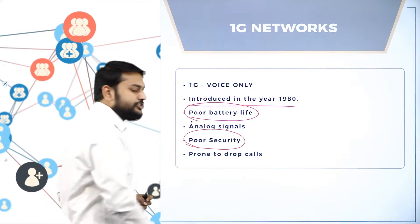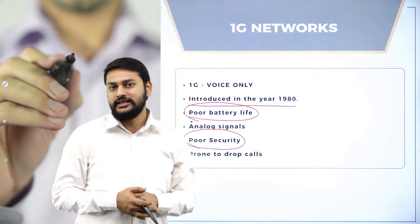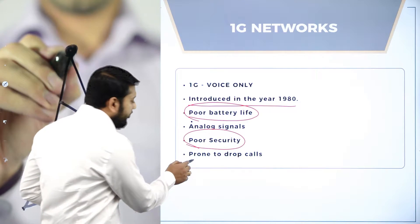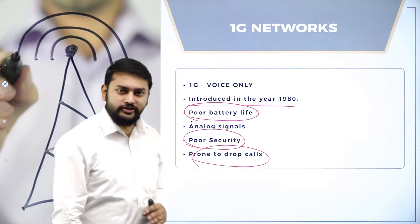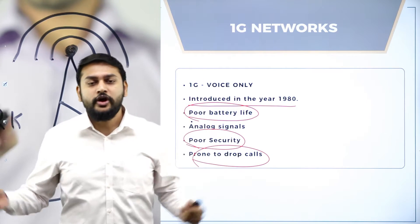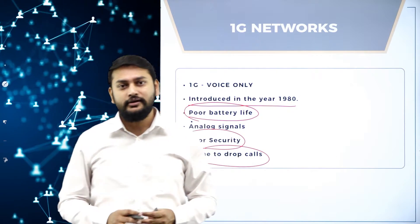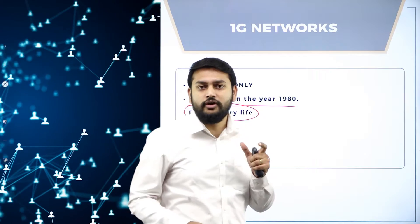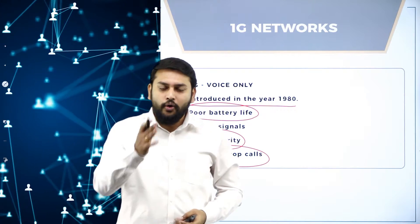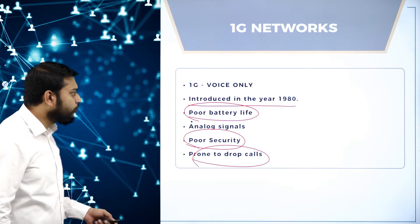We had a security problem — what we used to transmit was not highly secured. Calls used to get dropped frequently — that was a major drawback. But the good news about 1G is that we started communicating; we were able to send voice calls. Then to overcome all these drawbacks, we had the next generation — 2G.